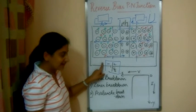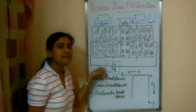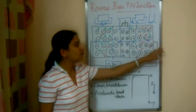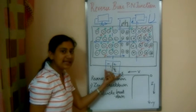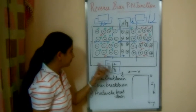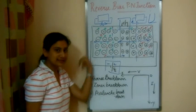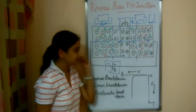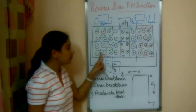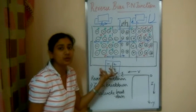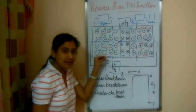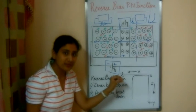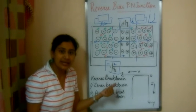If the applied voltage is small, we get a very minute current due to the minority carriers only, while the majority carriers are moved away from the junction. As we increase the applied voltage, the majority carriers are attracted further away from the junction and the minority carriers move toward the junction with larger speed. As the minority carriers move with larger speed, they gain a lot of energy — enough to break other covalent bonds by striking them.